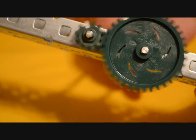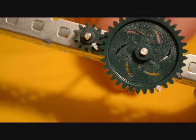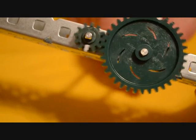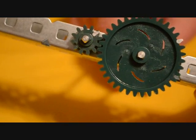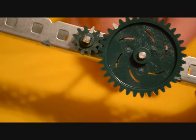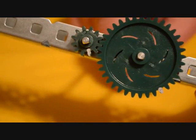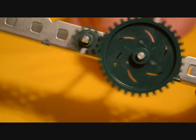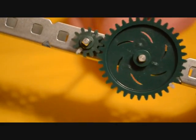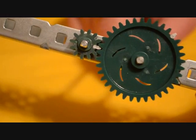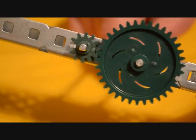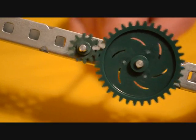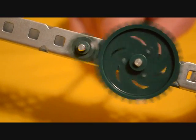The 12-tooth gear goes around three times as fast. Anything which is attached to the shaft of the 12-tooth gear, the driven gear, will spin three times as fast, but it will only receive one-third of the torque that is applied to the driving gear.